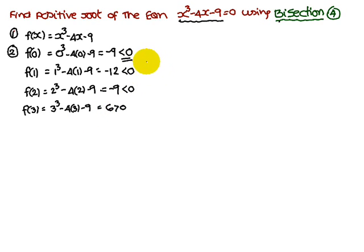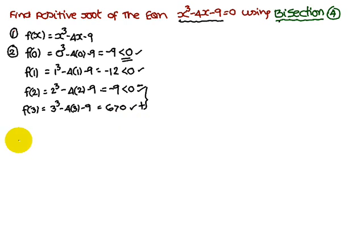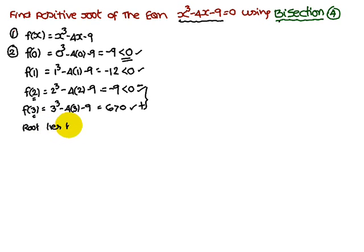Observing these results: f(0), f(1), and f(2) are all negative, while f(3) is positive. Two consecutive values have opposite signs — one negative and one positive — therefore the root lies between 2 and 3. When you come across two opposite signs, the root lies between those two values.